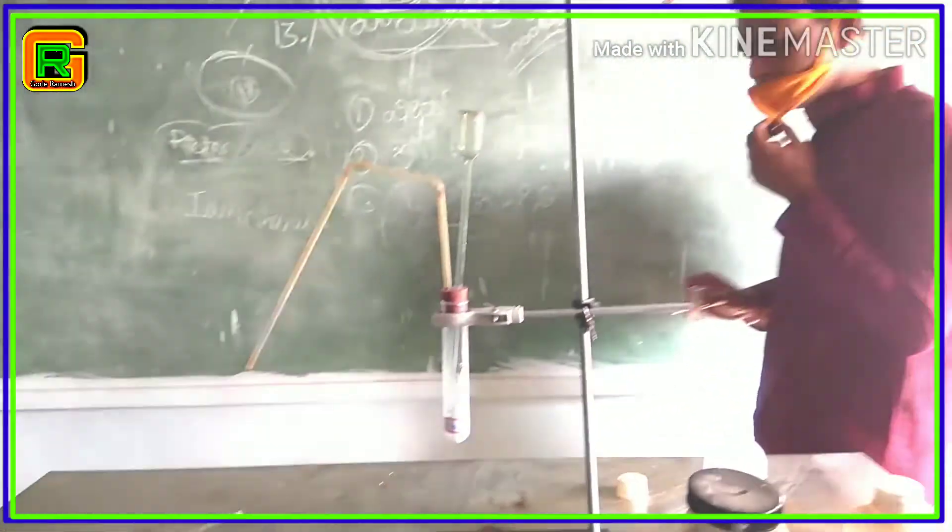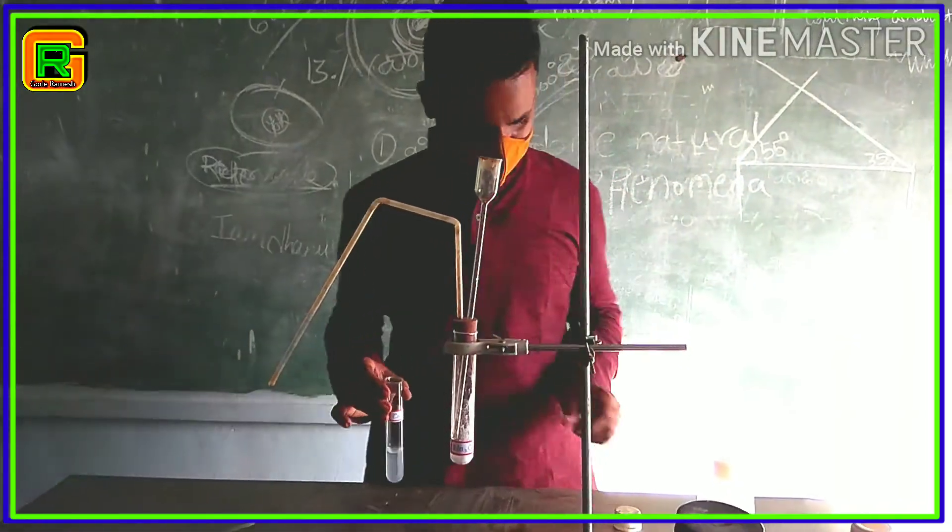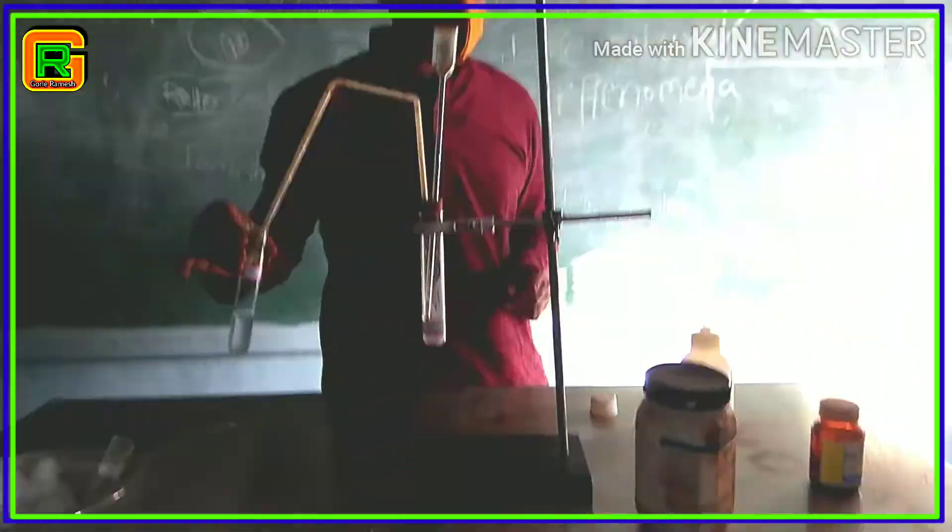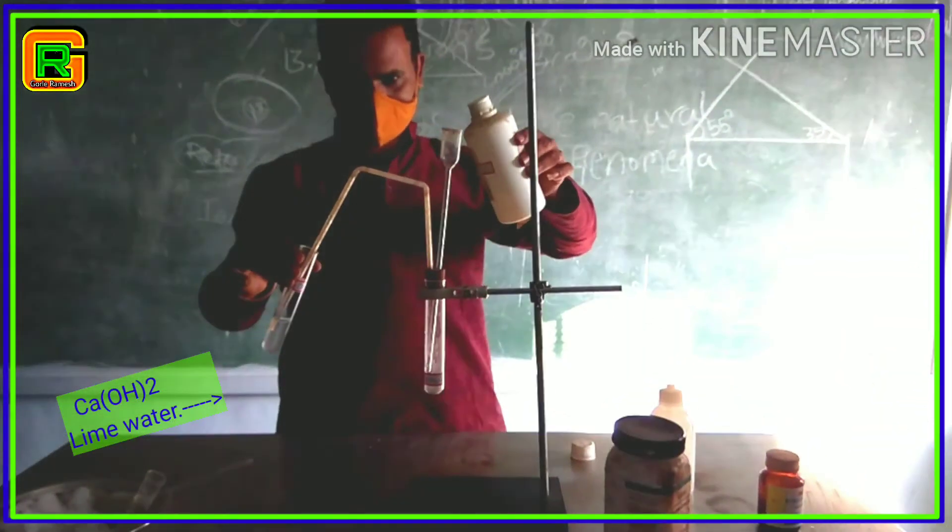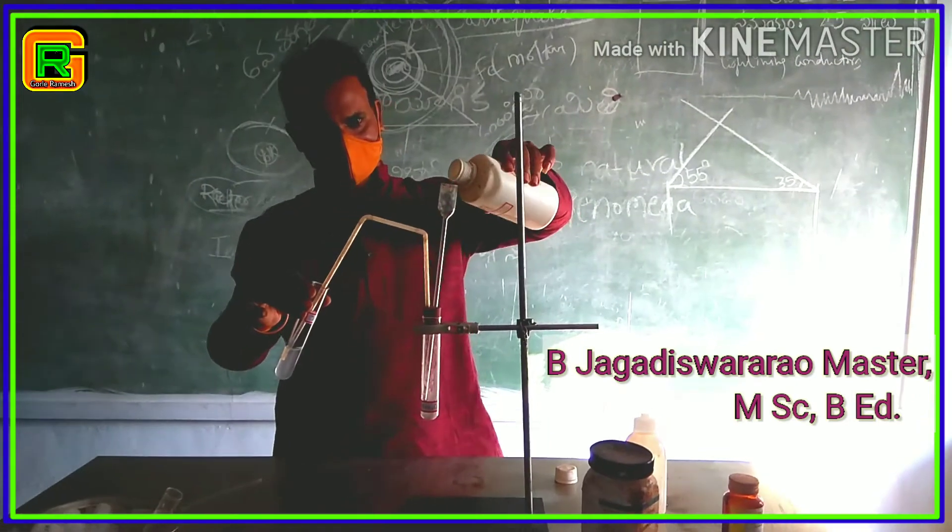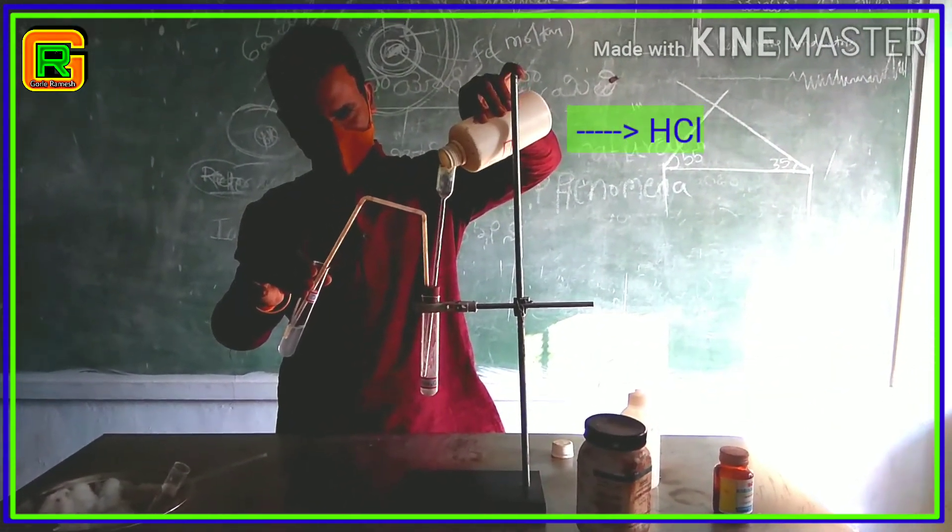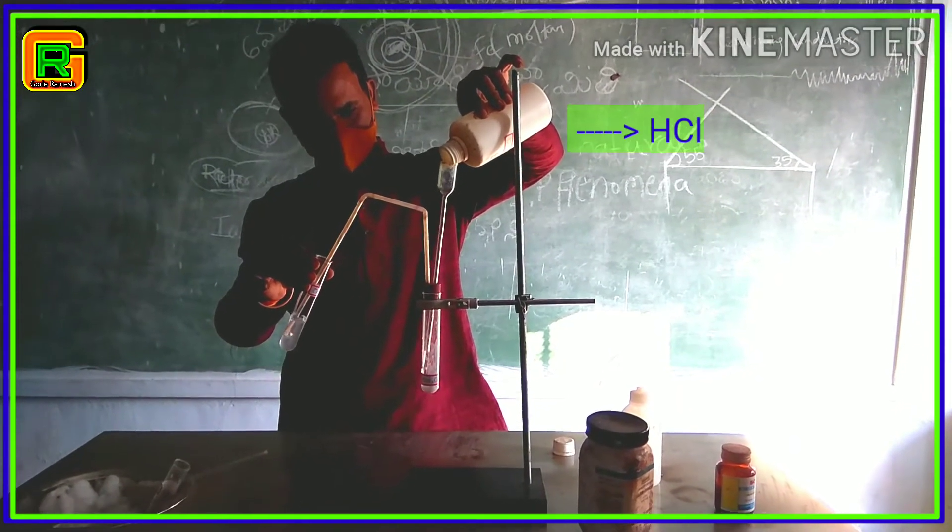And also, ready with lime water in the other test tube, that is calcium hydroxide solution. Let's keep the other end of the delivery tube in the lime water as shown here. Now, add sufficient quantity of dilute hydrochloric acid to sodium carbonate through the thistle funnel.